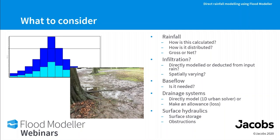Drainage systems are a major consideration for urban modelling. The underground pipe network can be modelled directly using a 1D urban solver, though that requires significant data and configuration time. Alternatively, you can make an allowance within your system — if you know the drainage capacity, say a 1-in-30-year standard, you can deduct that depth from your rainfall or apply an infiltration loss to account for it.